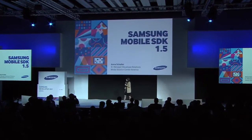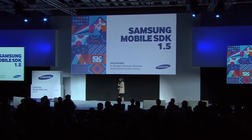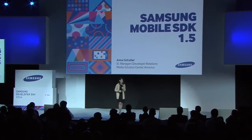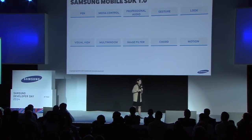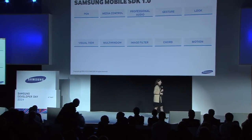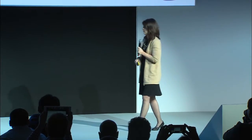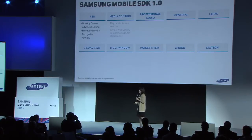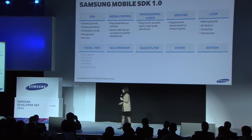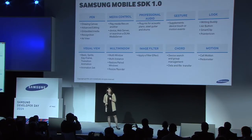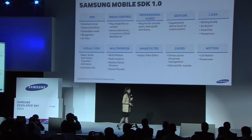The next half hour is on the Mobile SDK 1.5. Last September, we had an Unpack event in Berlin where we announced the Mobile SDK 1.0. It came with 10 different packages and a whole bunch of features. There are 124 classes in this thing, over 800 APIs. It's very robust.